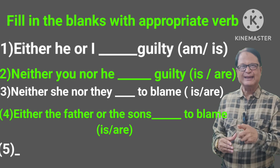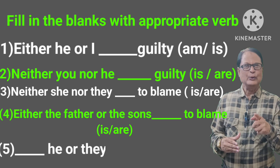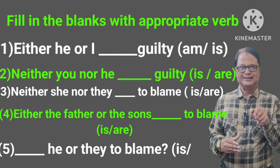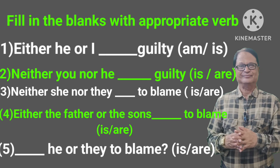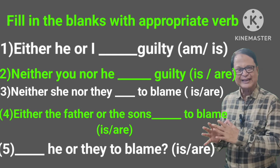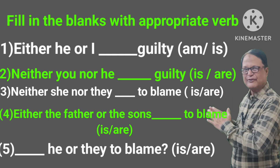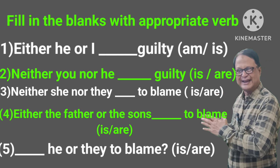Number five: Does he or they — dash — to blame? Is or are? Now look at these five sentences carefully and understand how they are written here.